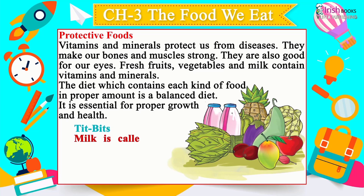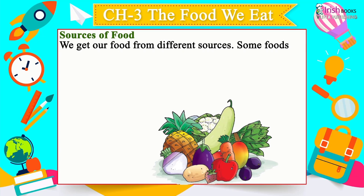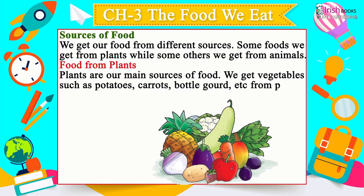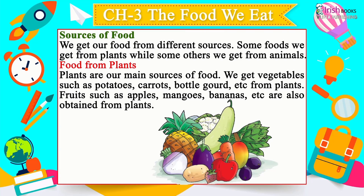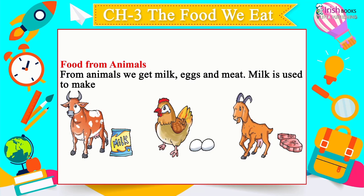Milk is called a complete food — it makes our bones strong. Sources of food: some foods come from plants, others from animals. From plants we get vegetables such as potatoes, carrots, bottle gourd, and fruits such as apples, mangoes and bananas. From animals we get milk, eggs and meat. Milk is used to make curd, cheese, butter and ice cream.